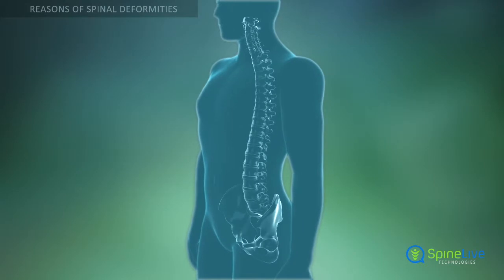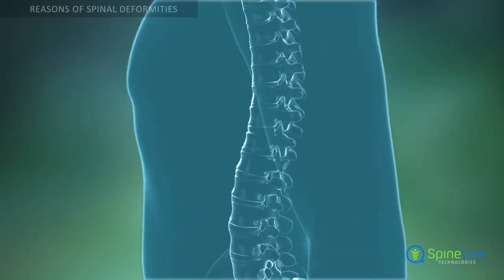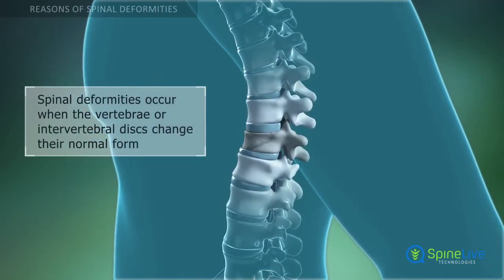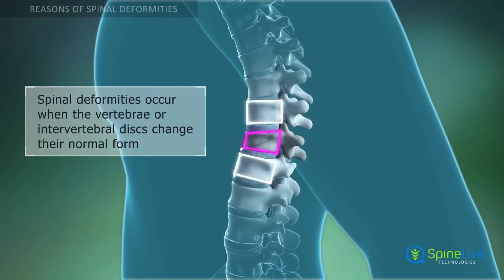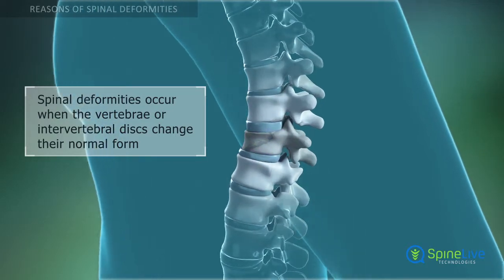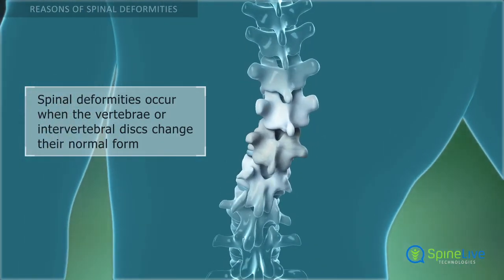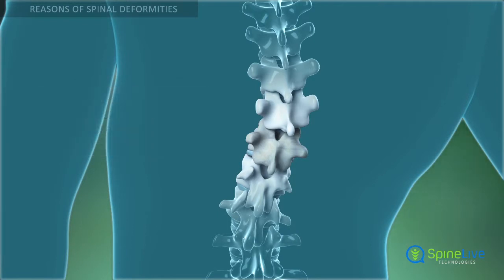Normally, the vertebrae of a healthy spine are shaped like a cylinder and are stacked one on top of each other with intervertebral discs between them. Spinal deformities occur when the vertebrae or intervertebral discs change their normal form. These conditions can be caused by different problems and diseases.